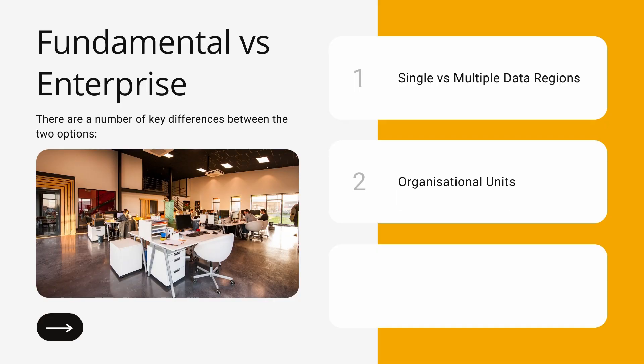The second difference follows through to organizational units. Organizational units is basically how, within Google, we organize users — you might have your US team, European team, Asian team, or broken down by department such as executives, marketing, and finance. Within enterprise data regions, you can have a different data region for each organizational unit. Within fundamental data regions, you can only apply it to the root org unit, i.e., for the entire organization.